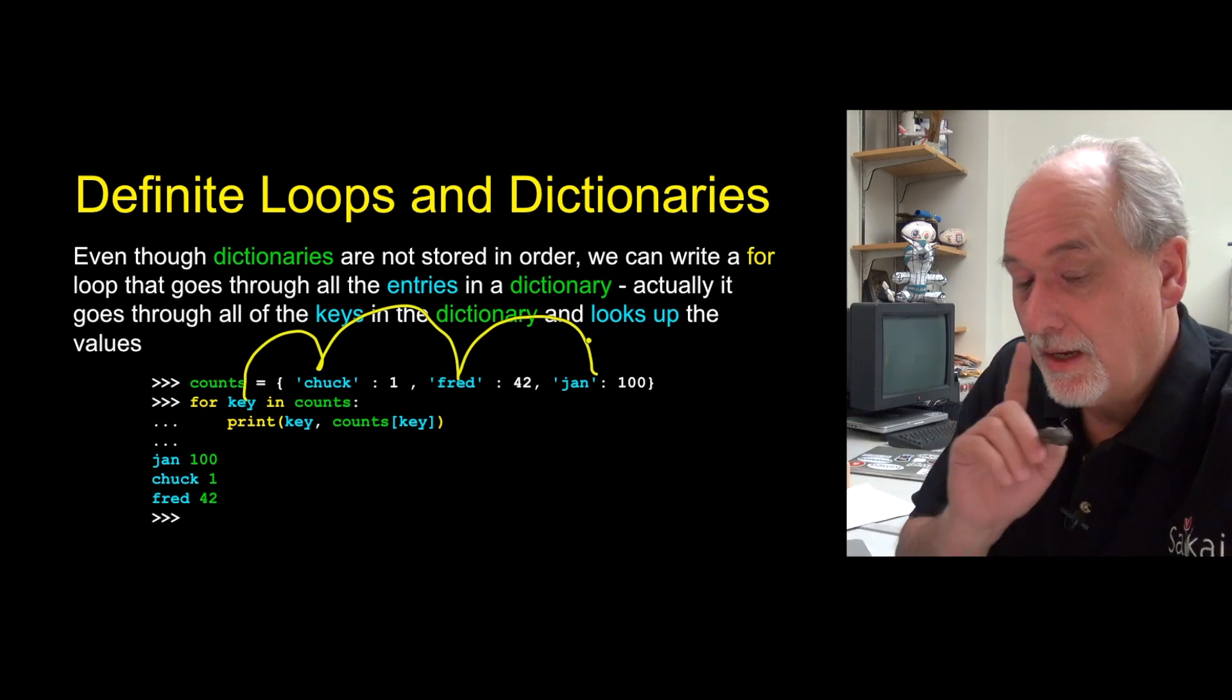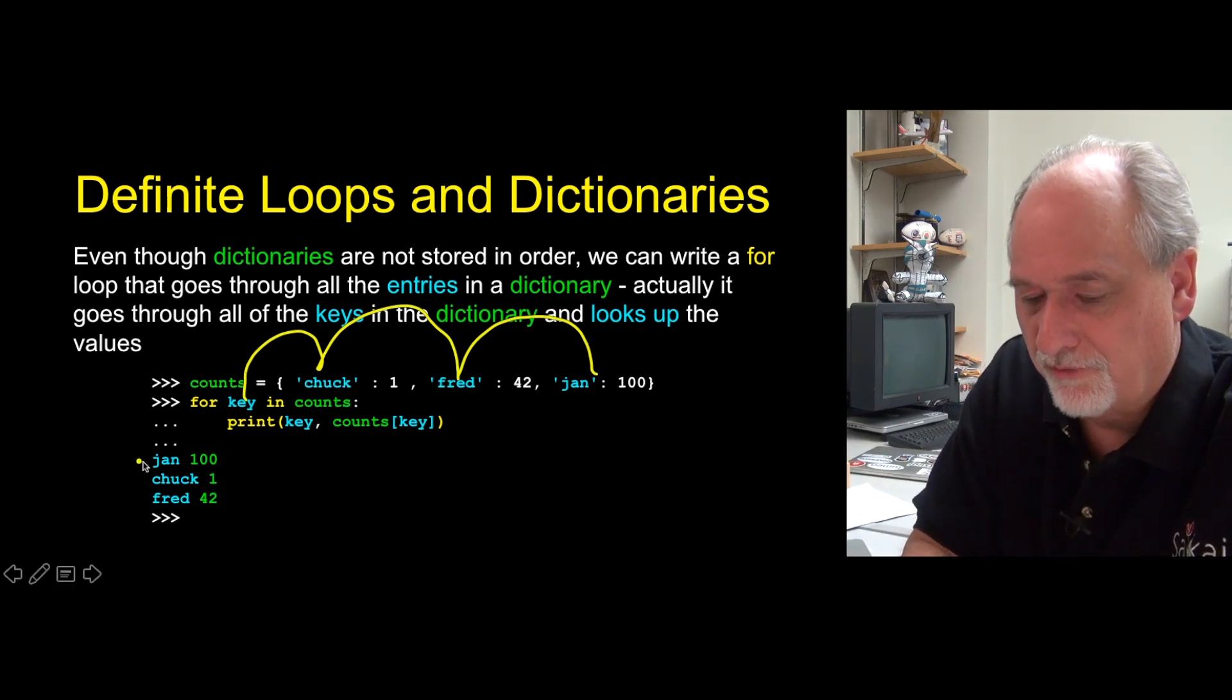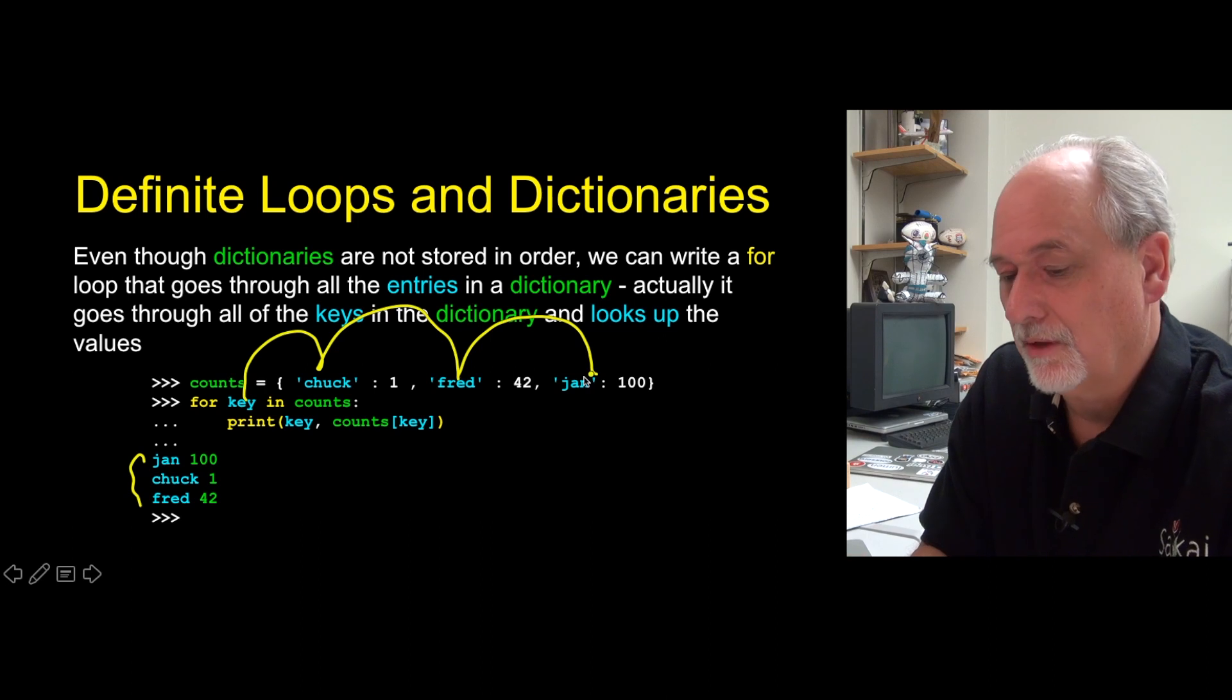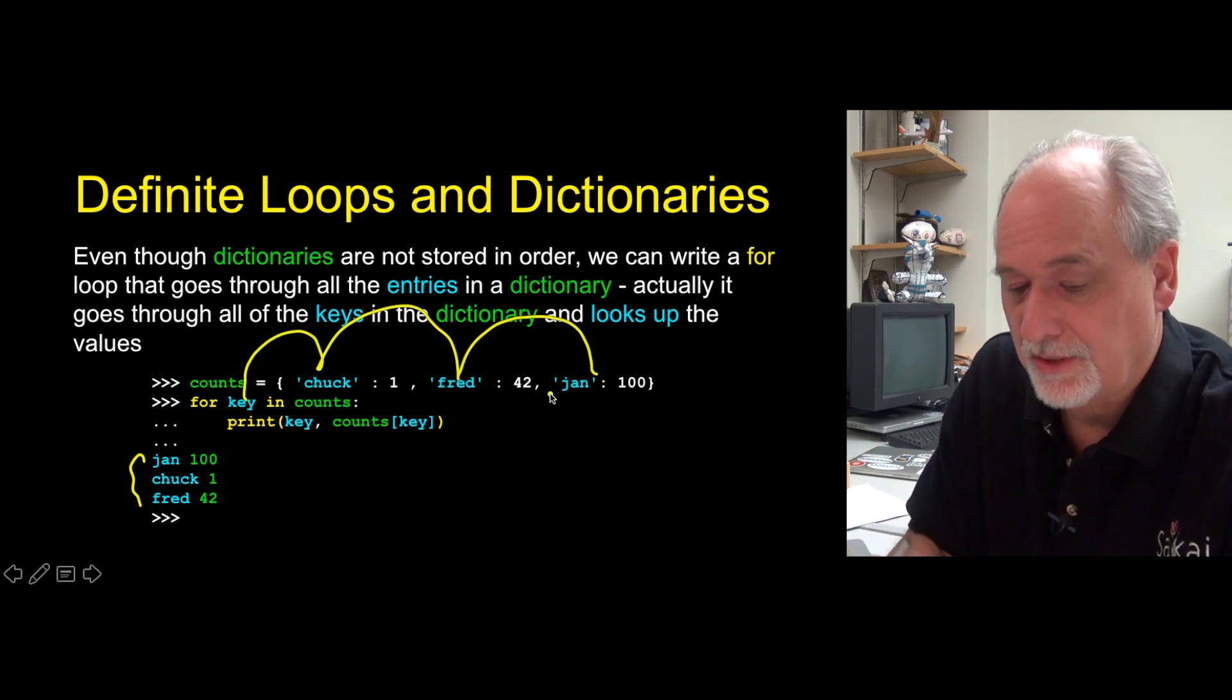Chuck, Fred, Jan. Not necessarily in that particular order. As you see, it goes Jan, Chuck, Fred. Because just because I typed it in in this order, it's not like a list. It doesn't stay in that order. It might move around a little bit as we add data to it or as we set the data up.